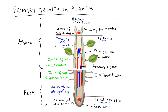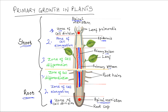A longitudinal section of the shoot and root tips reveals three distinct zones in each. This diagram shows a longitudinal section of the shoot and root. We can see three distinct zones in each part of the plant. There is a zone of cell division, then a zone of cell elongation, and a zone of cell differentiation.